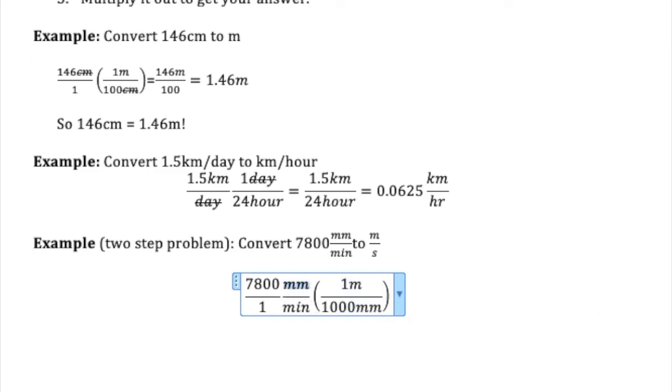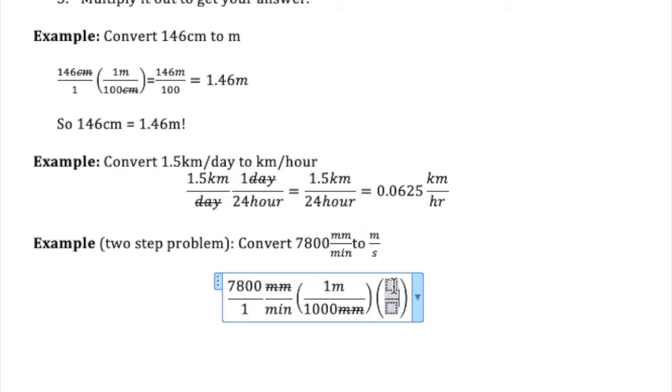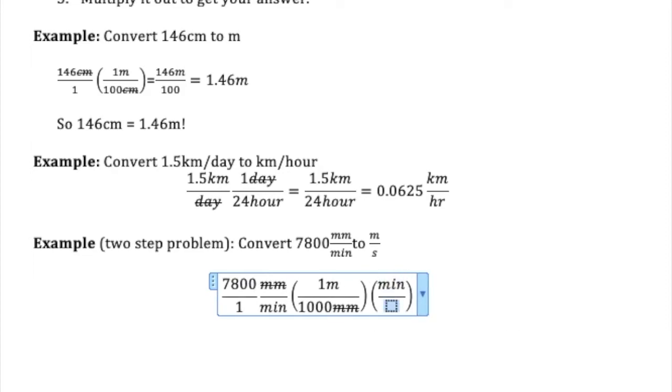So we get the millimeters to cancel, which is great. That's what we wanted. And now I just have to figure out how to cancel those minutes and get seconds. So I'm going to put the minutes on top to cancel the minutes on bottom. I'm going to put the seconds on bottom because seconds are what I want to get on the bottom in the end.